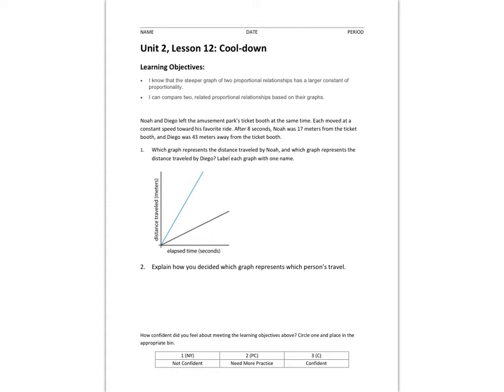In this problem, it states that Noah and Diego left the amusement park's ticket booth at the same time. Each moved at a constant speed towards his favorite ride. After 8 seconds, Noah was 17 meters from the ticket booth, and Diego was 43 meters away from the booth.